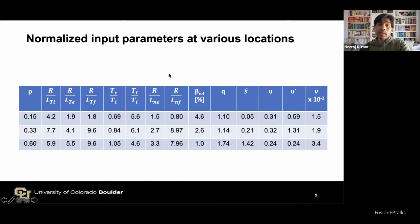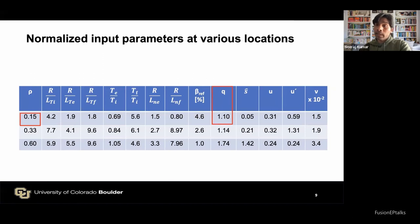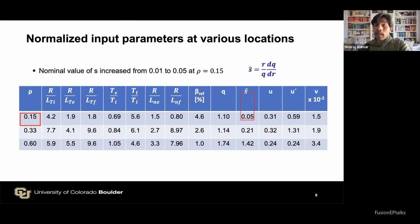These are the normalized input parameters in GKW units at three different radial locations. The region we focus on is the inner core at rho = 0.15. This region has a rather lower main-ion temperature gradient compared to the outer part, a slightly lower Ti/Te ratio, and slightly peaked electron density profile. Plasma beta is very high in the inner core for these hybrid discharges, and the safety factor profile is flat but slightly above 1, which prevents destabilization of large MHD activities. The nominal magnetic shear was around 0.1, increased to 0.05 at this radial location.